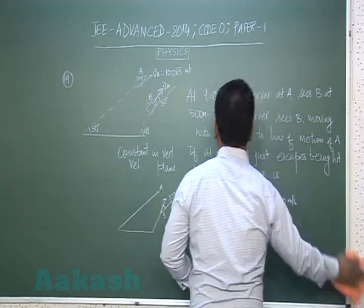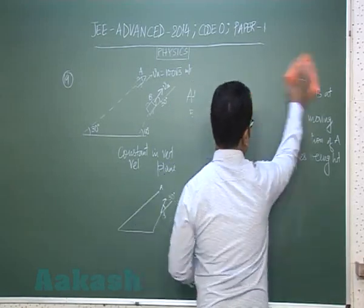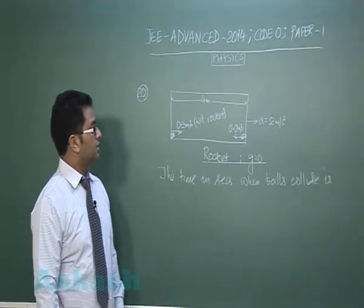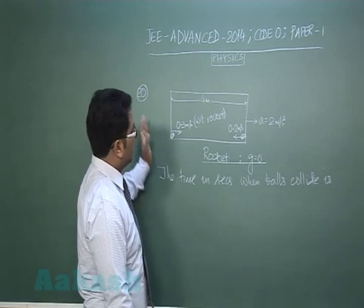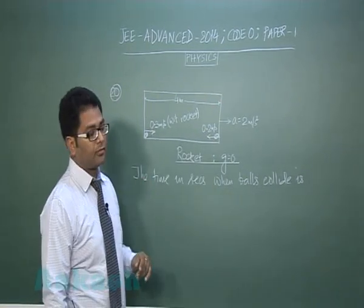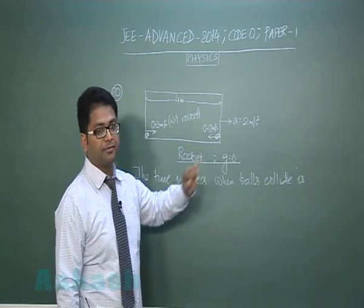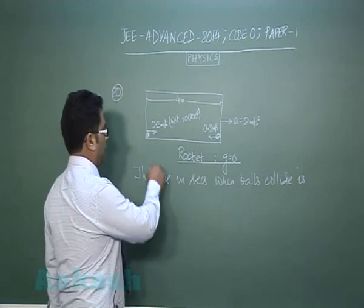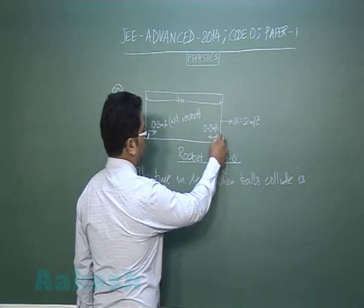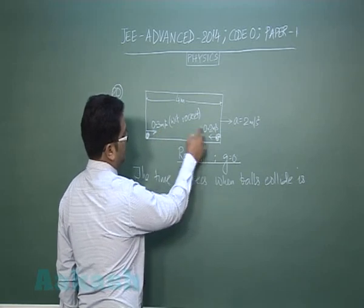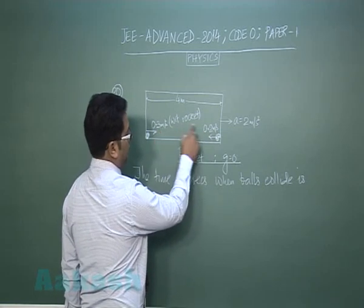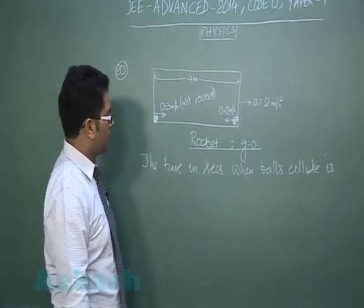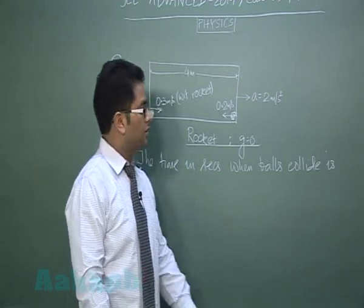Now we will see the final question, question number 20. There is a rocket of length 4 meter moving in a gravity free region and the rocket is moving with an acceleration 2 meter per second square. And two balls are thrown, one right other left, with this much velocity, but keep in mind the velocities given are with respect to the rocket. And we have to find the time in seconds when the balls collide.